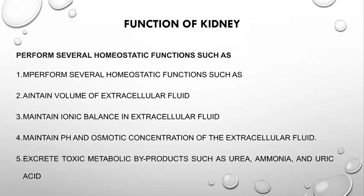The kidney performs several homeostatic functions: it maintains the volume of extracellular fluid, maintains ionic balance in intracellular and extracellular fluid, maintains the pH and osmotic concentration of the extracellular fluid, and excretes toxic metabolic byproducts such as urea, ammonia, and uric acid. The pH of urine is acidic, which is why we refer to it as uric — and with this, the coverage of the excretory system is complete.